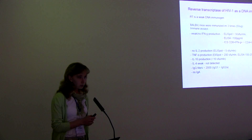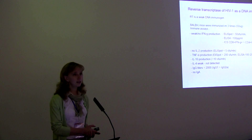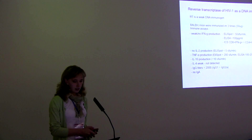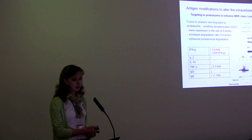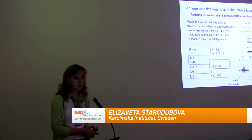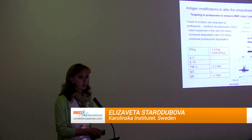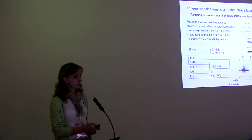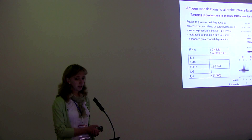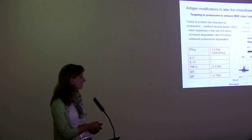Given this poor immunogenic DNA plasmid, we tried to apply different approaches. First, we tried to modify the antigen using an intracellular retargeting strategy. We tried to target RT to proteasomes to enhance MHC class I presentation. For this, we made a chimeric protein of RT fused with ornithine decarboxylase, a protein that is rapidly degraded by proteasomes.